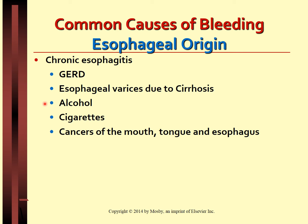Alcohol and cigarette smoke cause the mucous membrane to break down, and the underlying layers are not able to counteract the harsh effects of stomach acids, causing gastric ulcers which can ultimately result in bleeding. Cancers grow in size, become dysplastic and invasive, causing erosion to surrounding tissue as well as rupturing blood vessels.